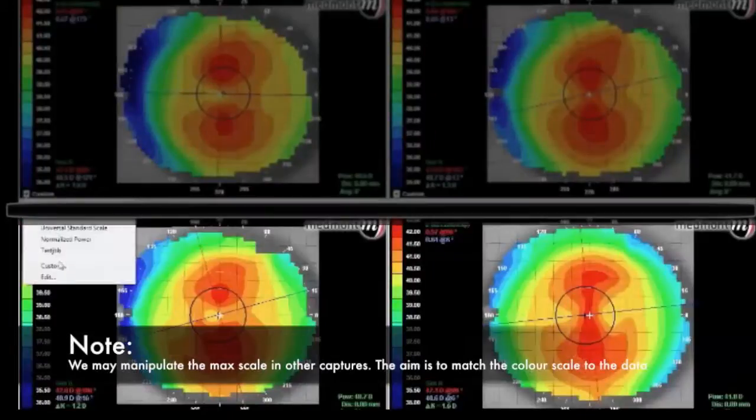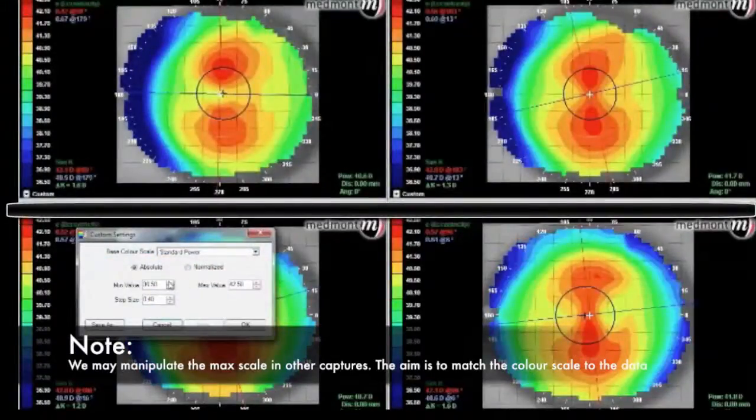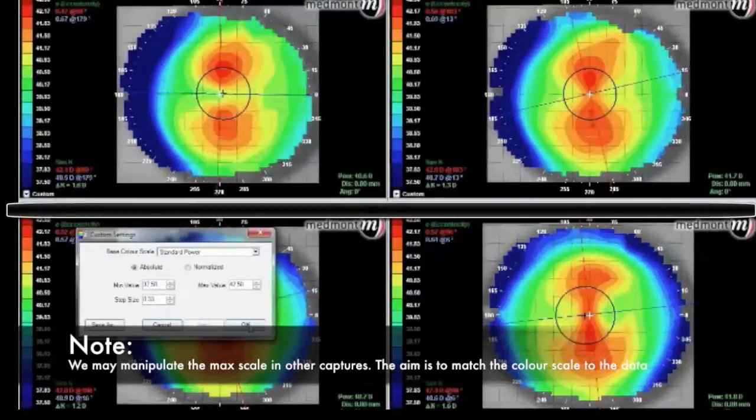For these maps, we click custom and manipulate the minimum scale to better show the optics of this axial power map.